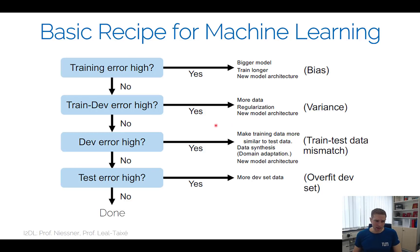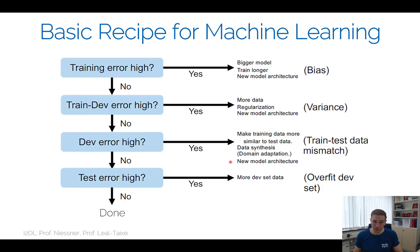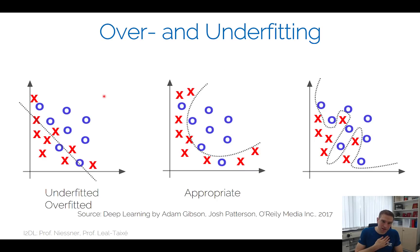If you do too much regularization you make the training error worse again, so you have to go back and check. If the validation error is still too high, consider more training data, more data augmentation, or domain adaptation — typically the problem is that training and test data distributions don't match. If your test error at the very end is too high, ideally you want to test only once, so then you basically have to start over.